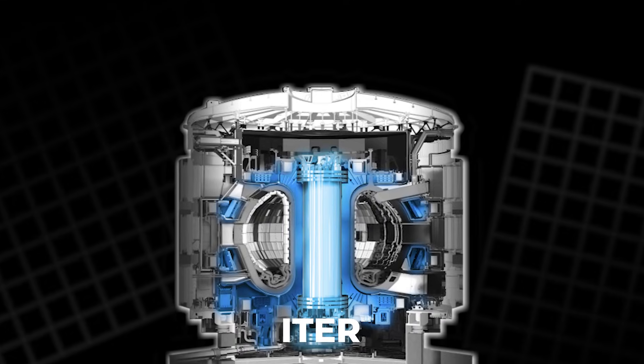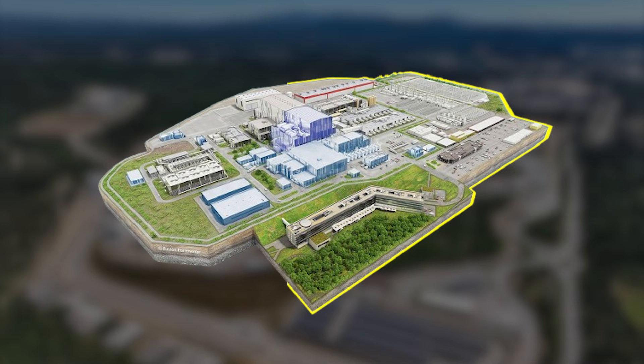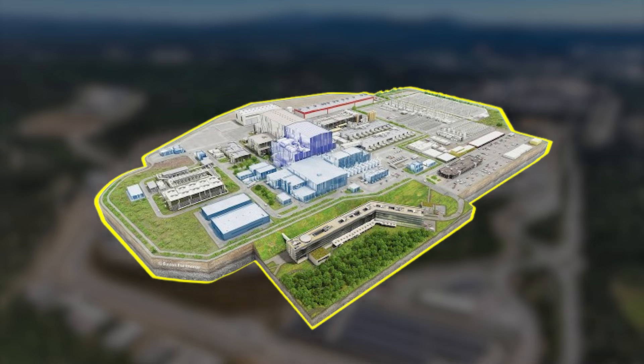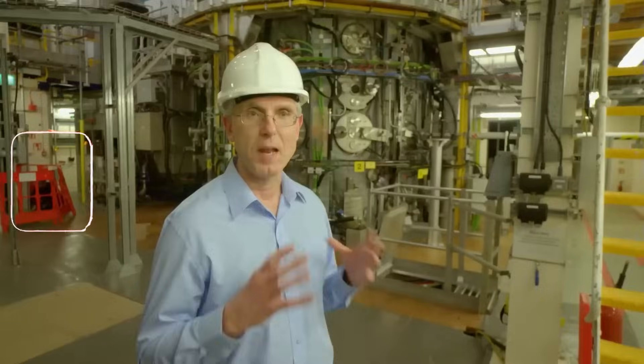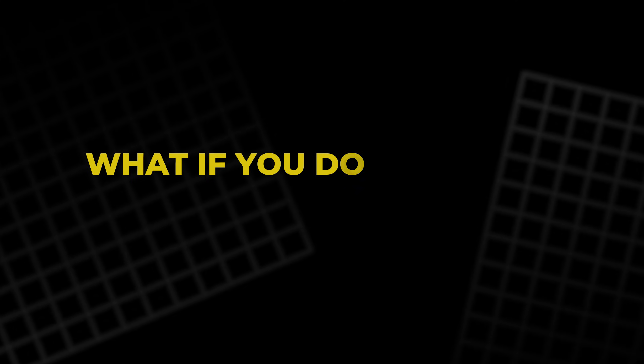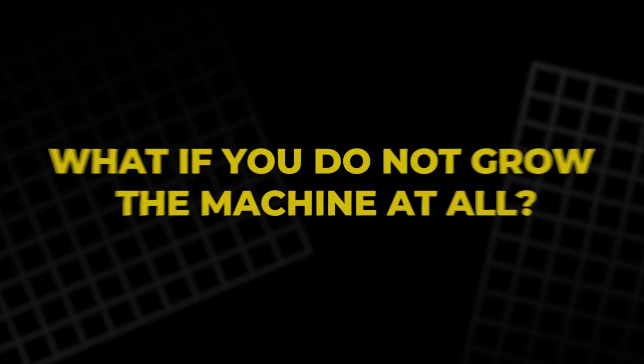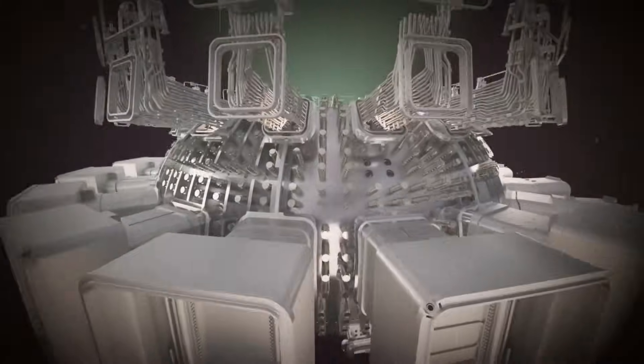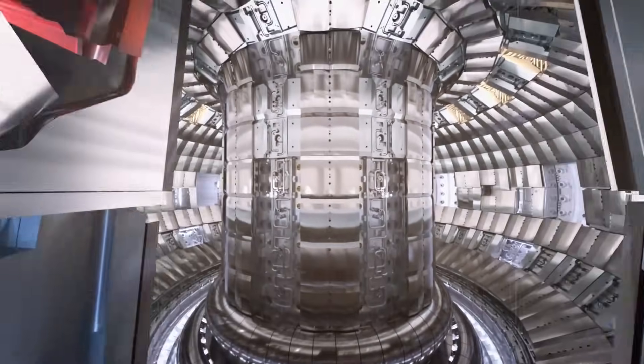That mindset gave us ITER, a project so big its main platform covers the area of about 60 soccer fields. Then MIT asked a sharper question: What if you don't grow the machine at all? What if you shrink it and use magnets so strong that the plasma still behaves?